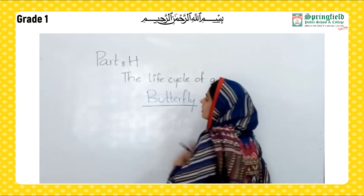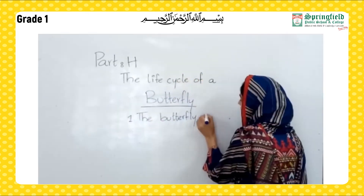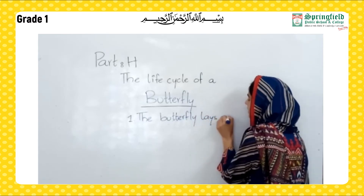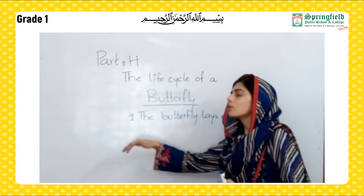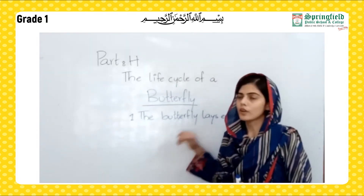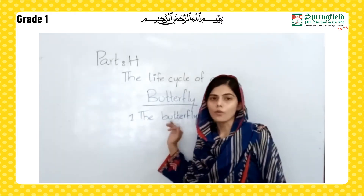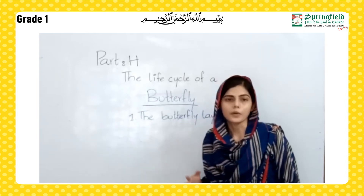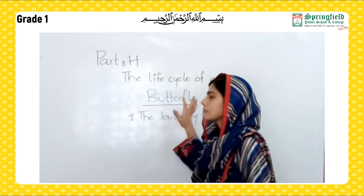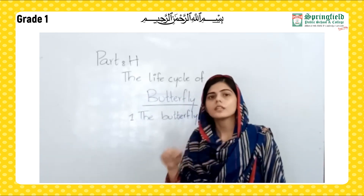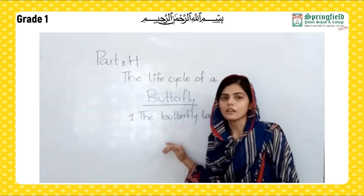What other changes are happening during their life cycle? You have to enlist them. Read each question and attempt them accordingly. The butterfly lays eggs; from those eggs a larva comes out. That larva develops into a caterpillar, and then the caterpillar develops wings and changes into a complete butterfly. In this way, the butterfly repeats its cycle again. Read the question and write the answer accordingly.